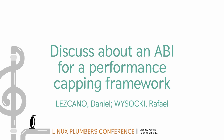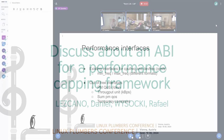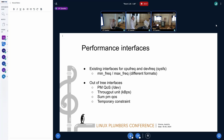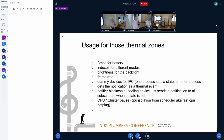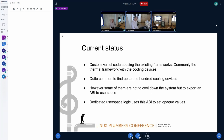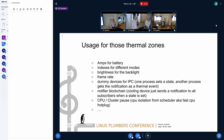This presentation is about trying to find a way to define a set of ABI for performance. When going through the different cooling devices in a ThermalNet framework, we find that there are a lot more than 100 cooling devices. These cooling devices just export a file where you can set an index value — essentially a 'set current state.'